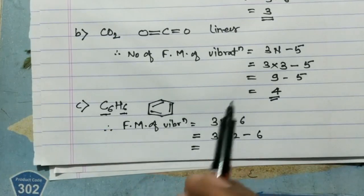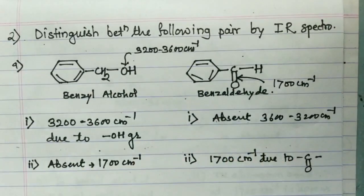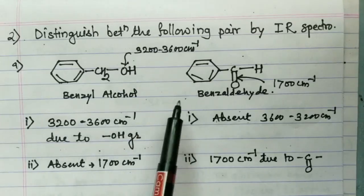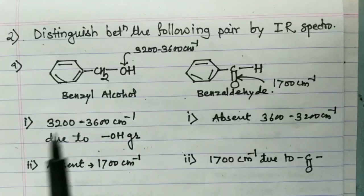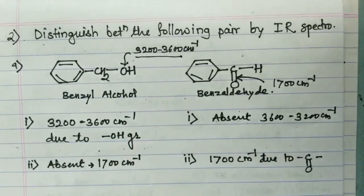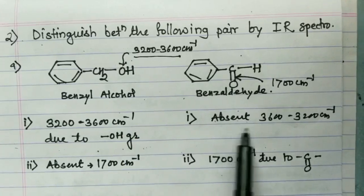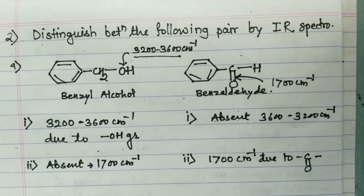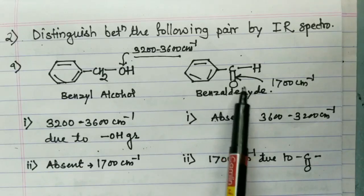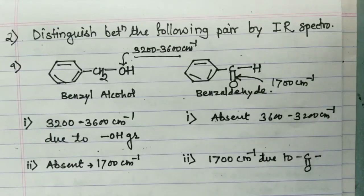Another type of question asked in IR spectroscopy is: distinguish between a given pair by IR spectroscopy. For example, benzyl alcohol and benzaldehyde. In benzyl alcohol, the OH group is present, which shows an IR frequency at 3200–3600 cm⁻¹. The same frequency is absent in benzaldehyde. In benzaldehyde, the carbonyl group shows an IR absorption band at 1700 cm⁻¹, which is absent in benzyl alcohol.